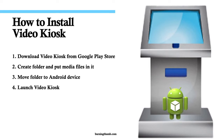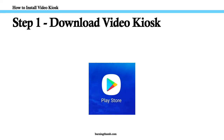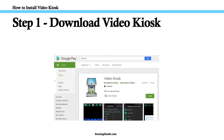Here's each of these four steps in detail. Step 1: If you haven't already done so, go to the Google Play Store on your Android device and download Video Kiosk. Please note that Video Kiosk installs in trial mode. All features are fully functional, but a watermark is displayed over your video. To remove the watermark, just purchase a license.